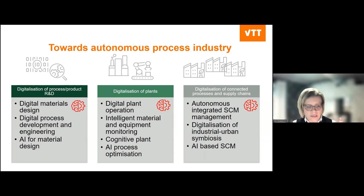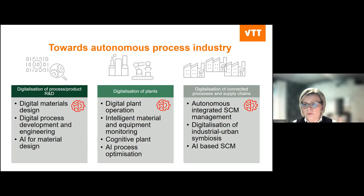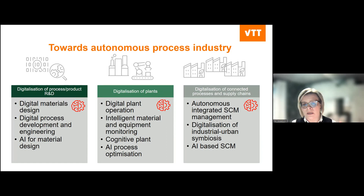AI can be used in process optimization — how do we run the processes in a really optimized way, using just minimal amount of energy and raw material while still achieving the best quality? The third part is how do we digitalize the connected processes and supply chains — how can we really manage the raw material throughput throughout the whole plant, and how can we manage and optimize the supply chain of materials throughout the value chain?